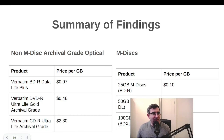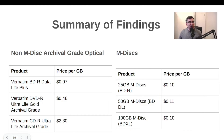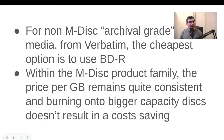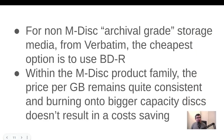To summarize: looking at non-M-Disc archival grade storage media, CDs are the most expensive, DVDs are less, and BDR is cheapest. Within M-Disc, there's not much variation — they're all about 10 cents per gigabyte. So for non-M-Disc archival grade storage the cheapest is BDR, and if you're buying M-Disc, you're not really saving anything by using the 100GB ones. Hope that was useful — if you've wondered about the price of optical archival media, thank you for watching, and do consider subscribing here on YouTube.